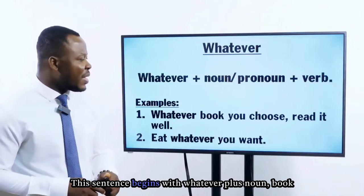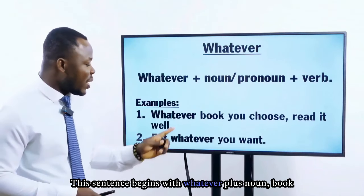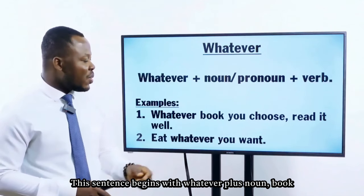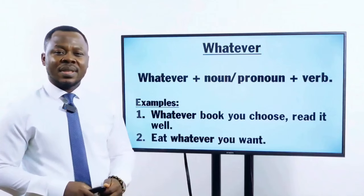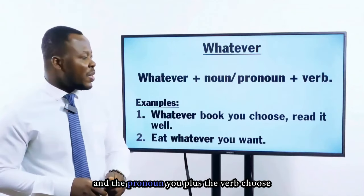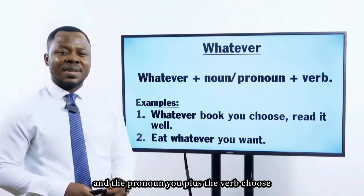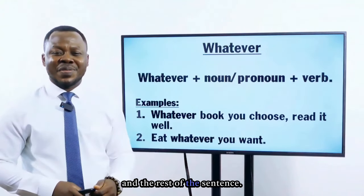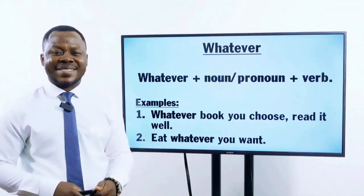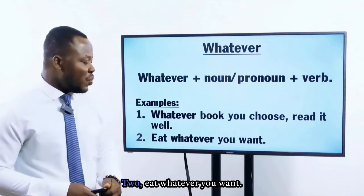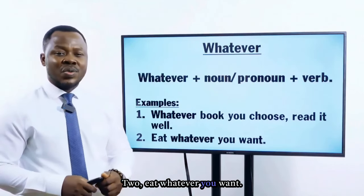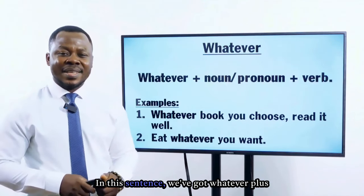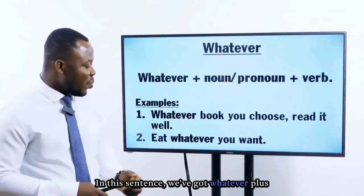This sentence begins with whatever, plus the noun 'book', plus the pronoun 'you', plus the verb 'choose', and the rest of the sentence. Example 2: eat whatever you want. In this sentence, we've got whatever followed by the pronoun and verb.